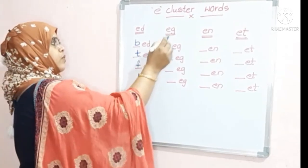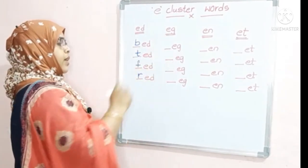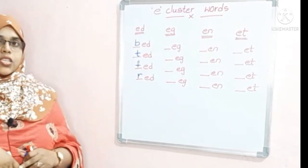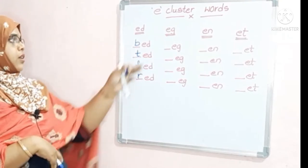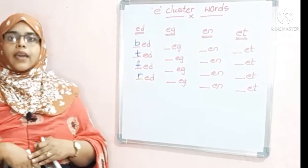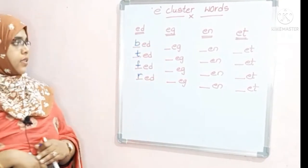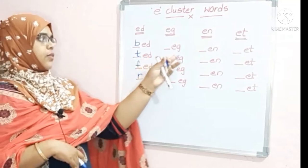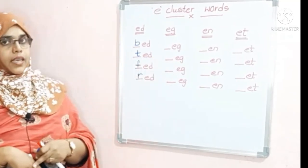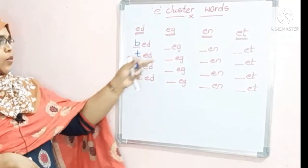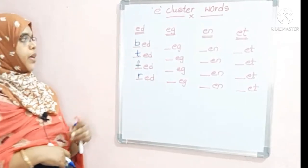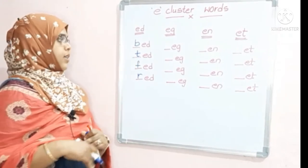Now by using the E-G, egg cluster. Here we are using the egg cluster. E-G will be 'egg'. The sound of E is A and the sound of G is G, so A-G will become 'egg'.